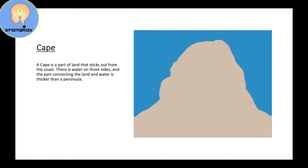The next landform is called a cape. A cape is a part of the land that sticks out from the coast — the land sticks out and goes into the water. There is water on three sides, and the part connecting the land and water here is thicker than a peninsula.